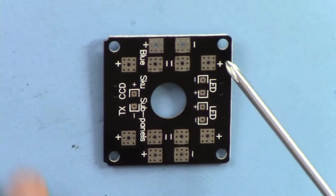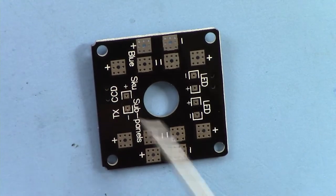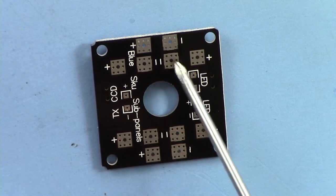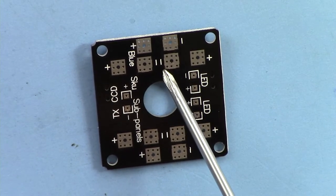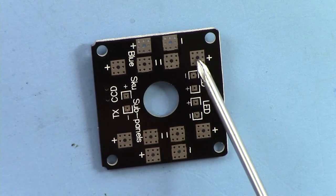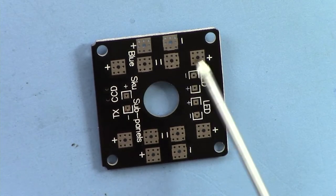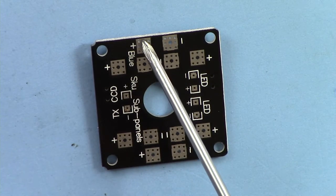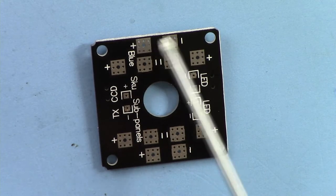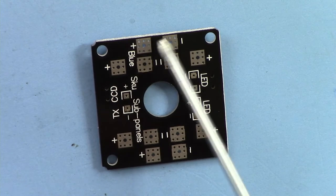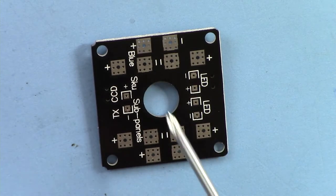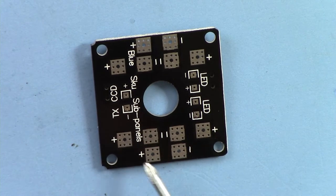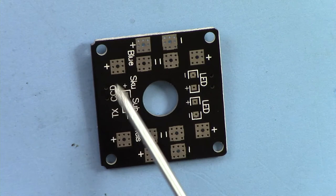This power distribution board has these labels here on this side. This is positive and this is negative. You can connect one ESC here, negative and positive. Another ESC here. Then you have positive and negative. You can connect another ESC or you can connect it to your battery.